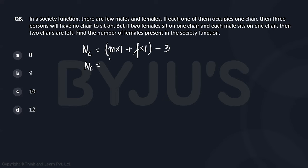Each male sits on one chair, so if each man sits on one chair and two females sit on one chair, then if total females is f, the total number of chairs required will be f by 2, not 2f.